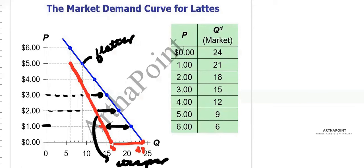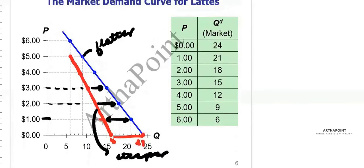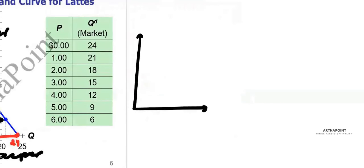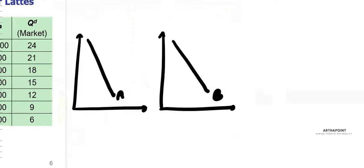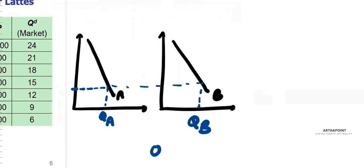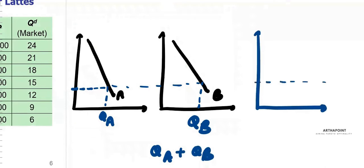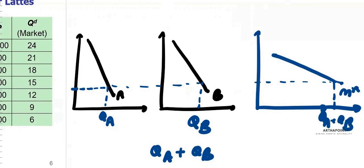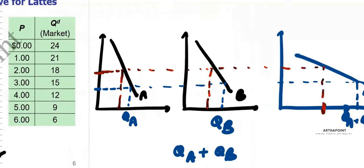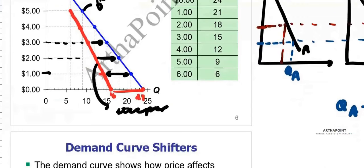Market demand is basically adding two individual demands together to get the combined demand. If this is the demand curve of individual A and this is the demand curve of individual B, we pick any price, see how much A is demanding and how much B is demanding, and add A plus B at that price to get how much the market is demanding — which is QA plus QB. At any other price, we find how much A is demanding and how much B is demanding, add them together, and that gives us the market demand.